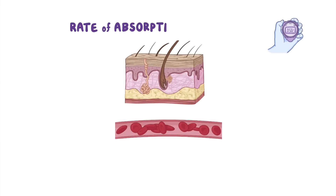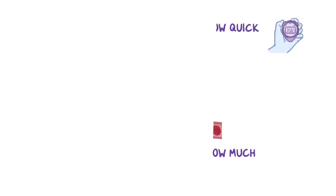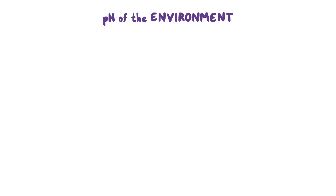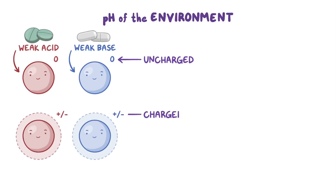The rate of absorption, or how quickly this process occurs, as well as the extent of the absorption, or how much of that medication reaches the bloodstream, depend on several factors. One of them is the pH of the environment where absorption takes place. Most medications are either weak acids or weak bases, and can exist in an uncharged or charged form.